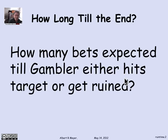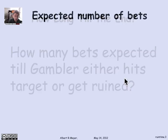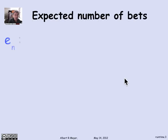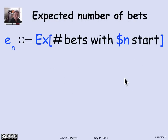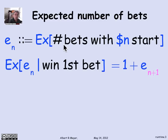We're asking how many bets are expected till the gambler either hits his target or gets ruined. The expected number of bets — we're interested in E_N, which is an abbreviation for the expected number of bets when you start with N dollars. This is the expected number of bets till the game ends, either with hitting the target or going broke. We'll condition on the first bet as previously.